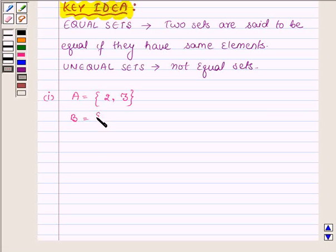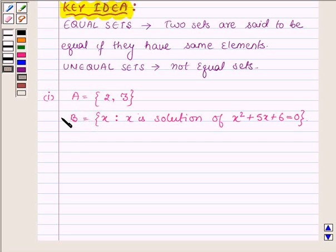And B is the set which contains all those elements x such that x is a solution of x² + 5x + 6 = 0. Now to find set B, we will find the solution of the equation x² + 5x + 6 = 0.